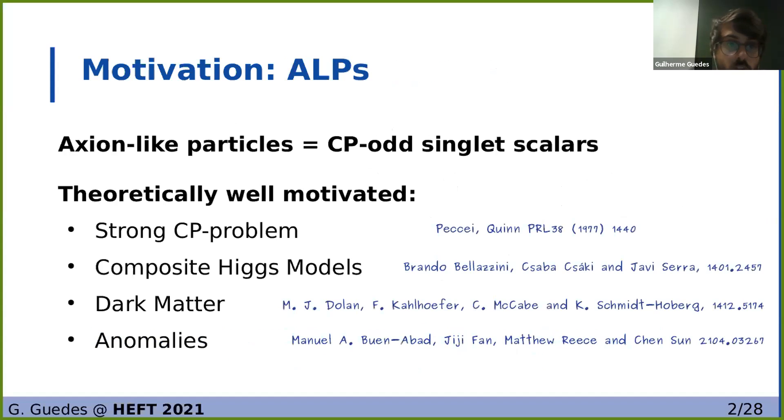One of the most motivated particles to consider are axion-like particles, which we define as singlets of the Standard Model gauge groups, which are pseudo-scalars. These are very well theoretically and phenomenologically motivated, namely by the axion itself, which serves to solve the strong CP problem, but also by composite Higgs models in which the same way as the Higgs arises as a pseudo-Goldstone boson of a spontaneously broken symmetry, so can other pseudo-scalars arise for certain symmetry breaking patterns.